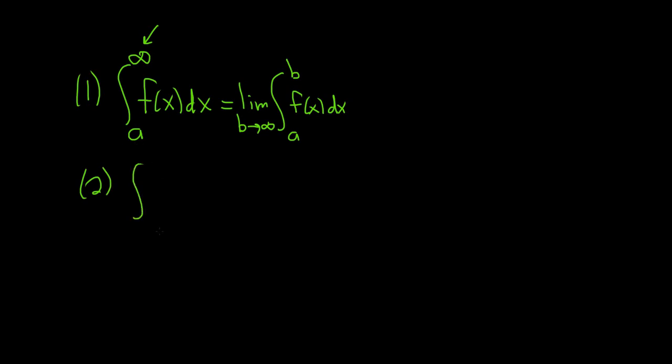If instead we have negative infinity to, say, a of f of x dx, in this case, same thing. We write the limit sign, and we replace the negative infinity with a letter, and again, I'll use b, and we let b approach negative infinity. And here we have our f of x and our dx.